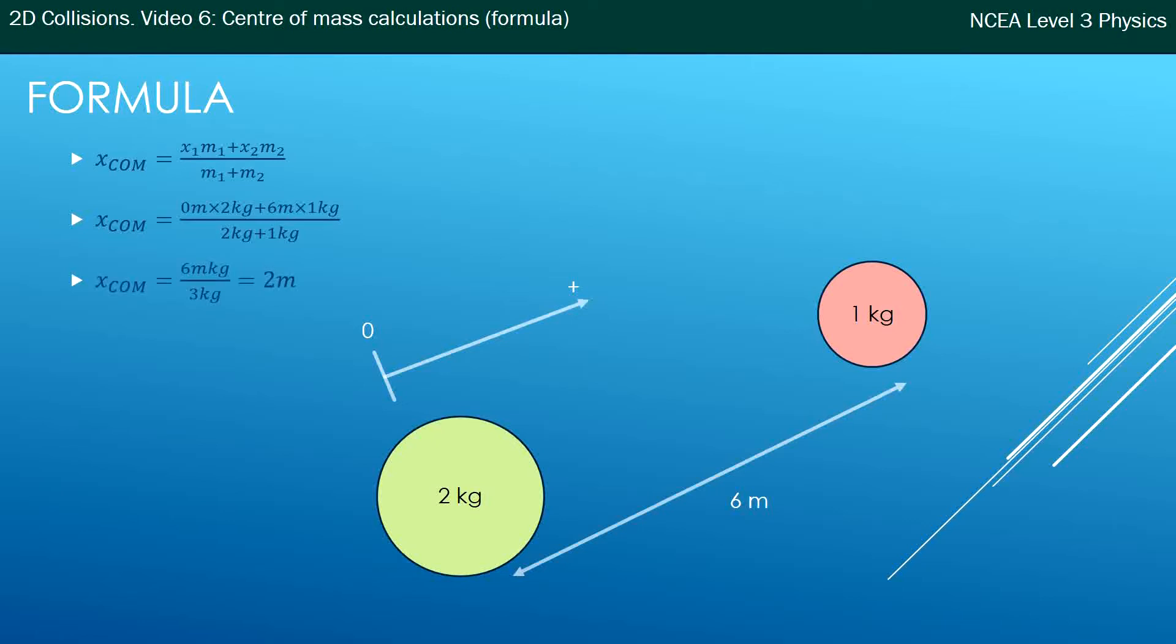Simplify that down and you'll see now because one of my objects is at the origin I've got a zero times something, it just makes the calculation a little bit easier. So 6 over 3 equals 2 meters and that's where we found this exact same center of mass using the ratio method.